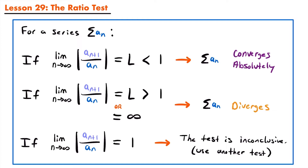The general process for the ratio test is: first identify the terms a sub n and a sub n plus 1, then take the limit as n approaches infinity of the absolute value of their ratio. Depending on the result, we conclude the series converges absolutely, diverges, or the test is inconclusive. The ratio test is particularly useful for series involving factorials or exponential parts, and less helpful for series resembling a p-series.